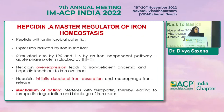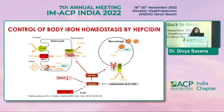Hepcidin, which is a master regulator of iron homeostasis, is a peptide with antimicrobial potential. Its expression is induced by iron in the liver and also by LPS and IL-6. Its overexpression finally leads to iron deficiency anemia, and hepcidin knockout leads to iron overload. It inhibits duodenal iron absorption, and the basic mechanism is by the degradation of ferroportin — the transporter of iron from the cell to the outside, which is a membrane protein. This diagram clearly shows how hepcidin increases macrophage activity and degradation of ferroportin.